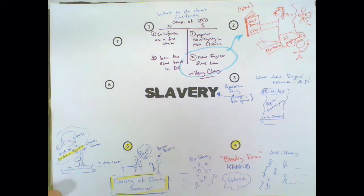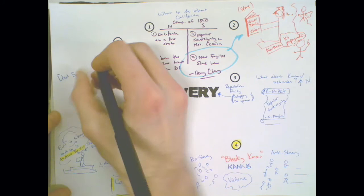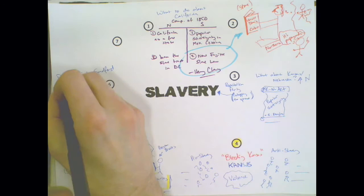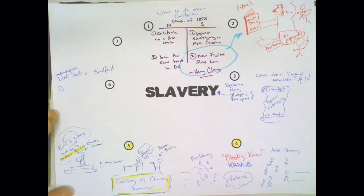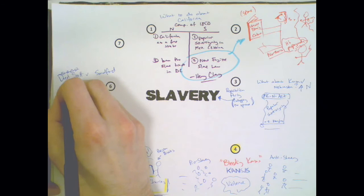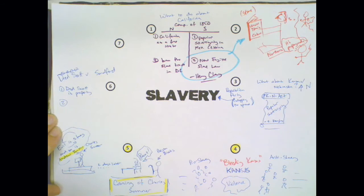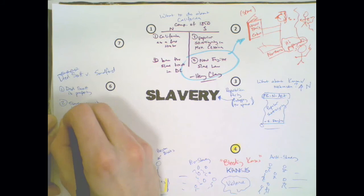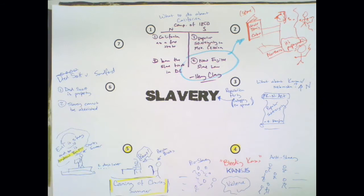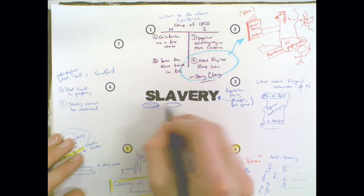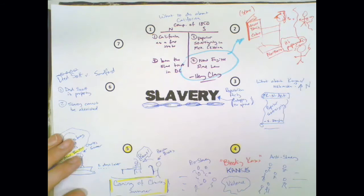This leads us to the Dred Scott versus Sandford Supreme Court case. Dred Scott is formerly enslaved, and he is suing for his freedom. The court basically says two things: one, Dred Scott is property, not a citizen; and two, because Dred Scott is property and the Constitution protects property, slavery cannot be abolished. That creates a whole lot of problems. People don't know what to do because they were hoping to abolish slavery, but now it becomes clear that they might not even have the right to do that.